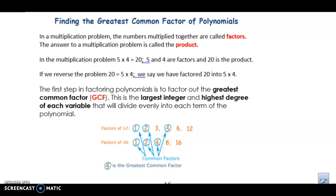In a multiplication problem, numbers multiplied together are called factors, which is something we already know, and the answer to a multiplication problem is a product. In the multiplication problem 5 times 4 equals 20, 5 and 4 are both factors, and 20 is the product. We're going to do the same thing with polynomials, but we're just going to break them up into chunks that make it easier for us to work with them.